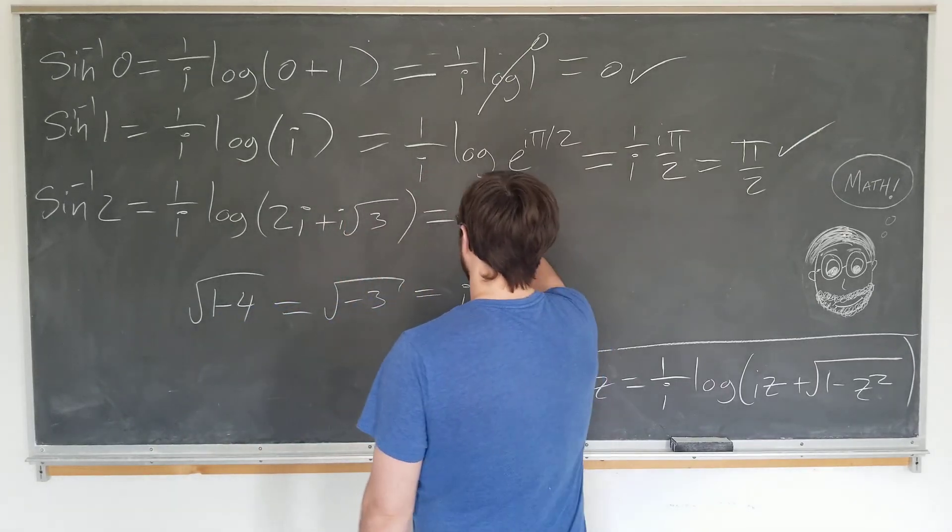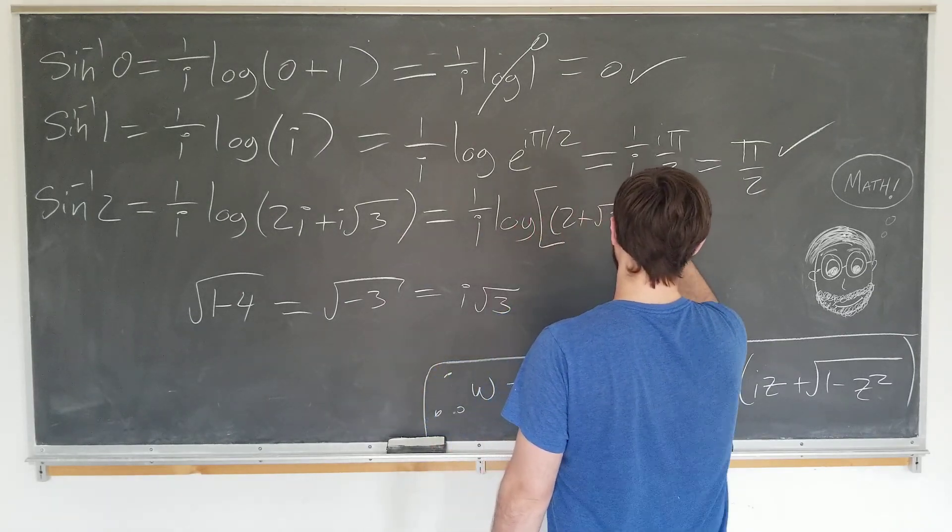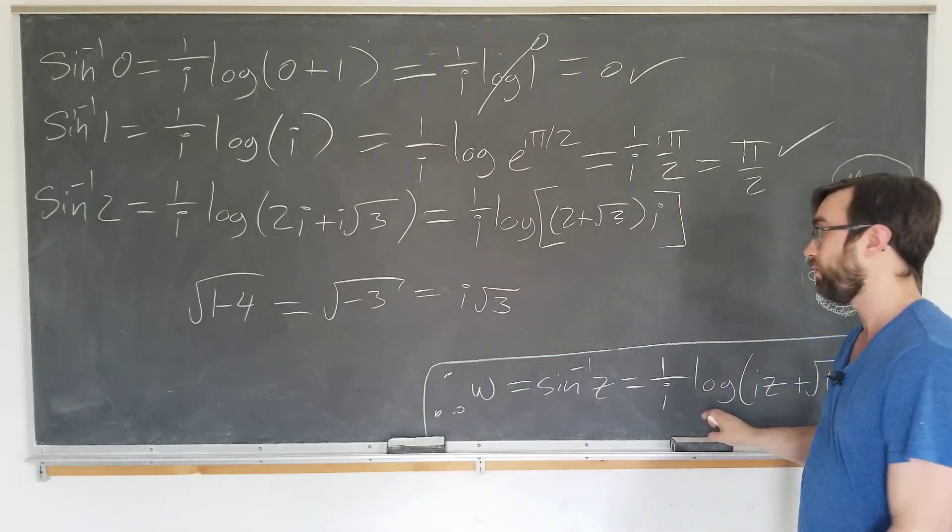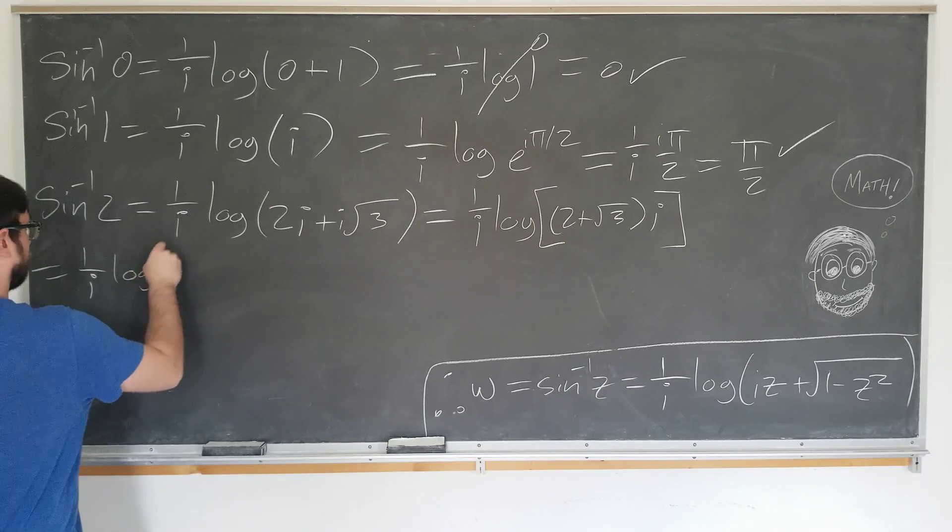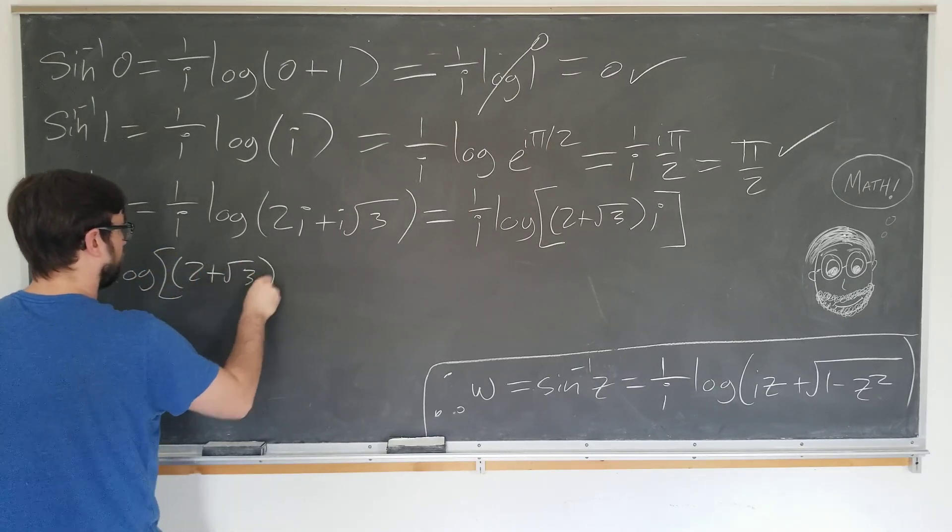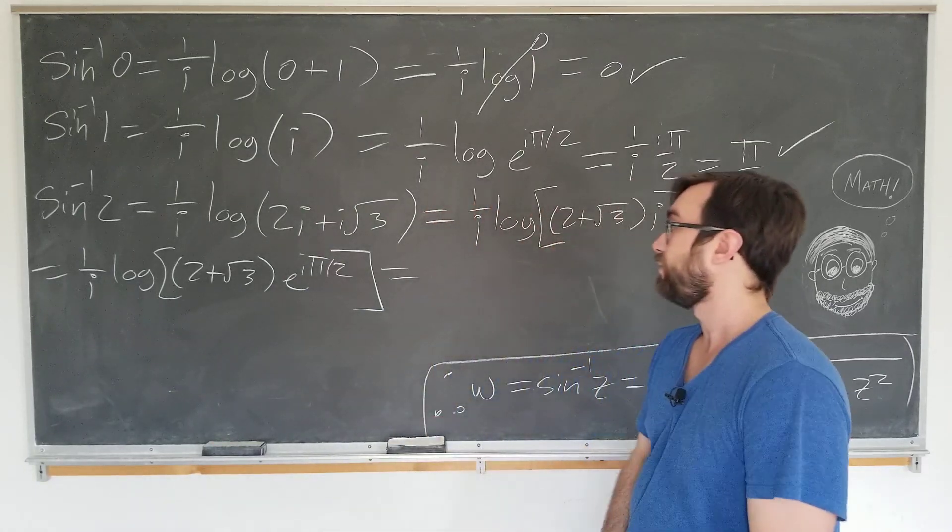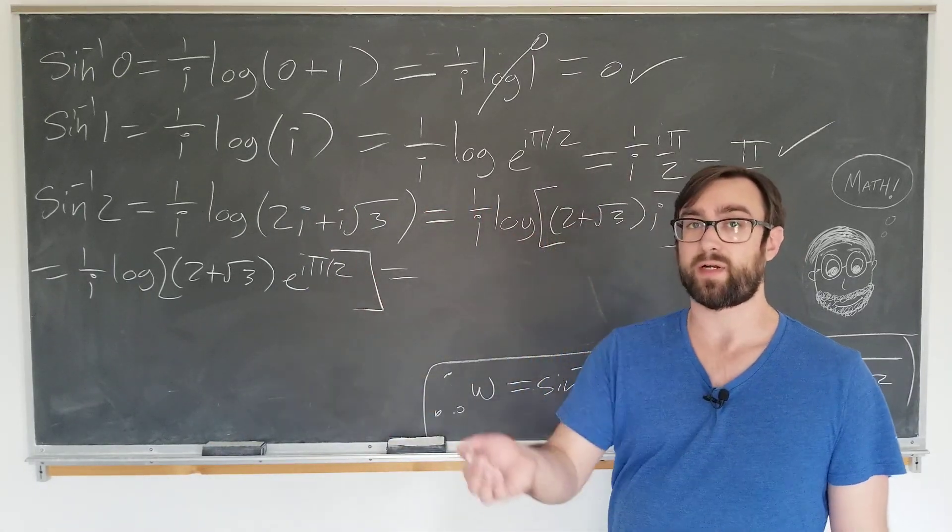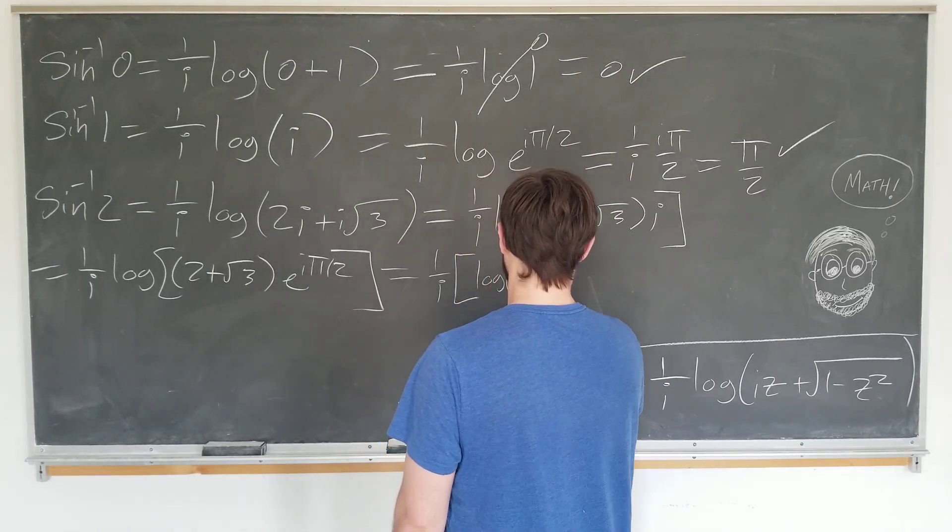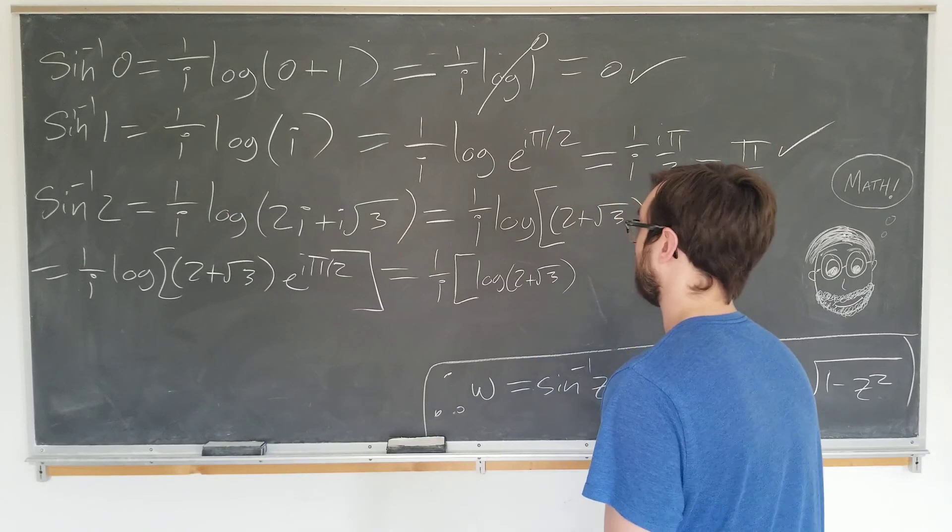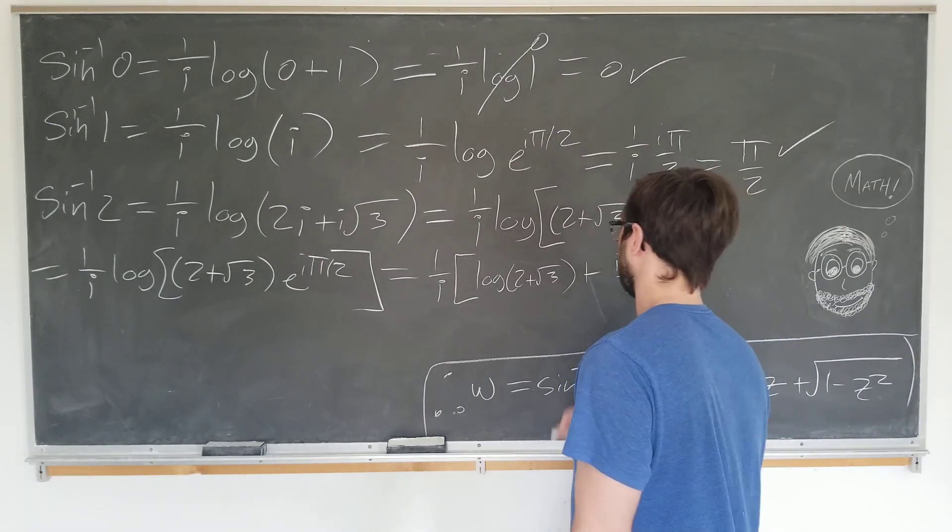And we can now write this as 1 over i log of 2 plus the square root of 3 times i. You can see where we're going now. We can just write i in polar form like we've been doing in the past several examples. This is 1 over i log of 2 plus the square root of 3 times e to the i of pi over 2. And using properties of logarithms, we can distribute the log through to them both. So we have log of product equals the sum of the logs.